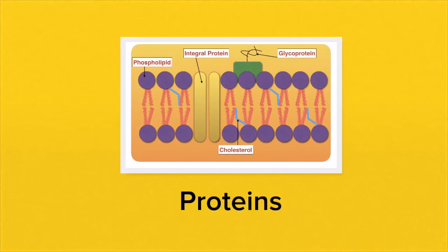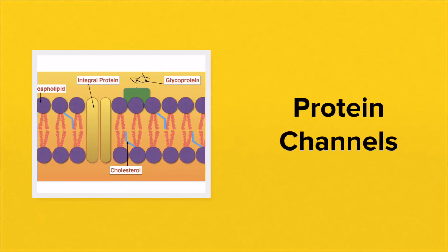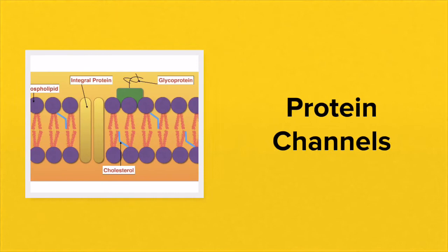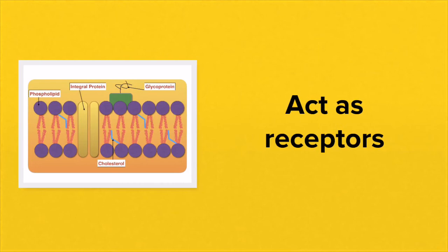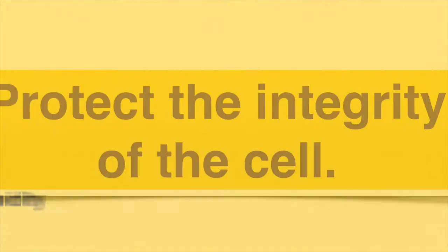Membranes contain many proteins. Some proteins are fully embedded into the phospholipid bilayer — these are integral proteins — and others are only half embedded. Some integral proteins can form protein channels, providing a route through which materials such as certain ions can enter and leave the cell. Other proteins that are not fully embedded can act as receptors, recognising particular molecules. There are also cholesterol molecules within the bilayer to control the fluidity of the membrane.